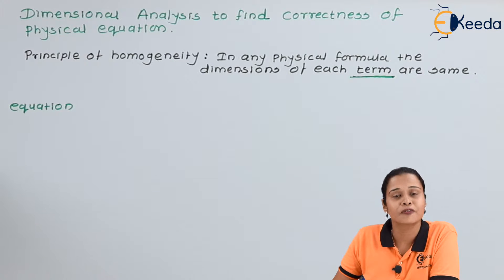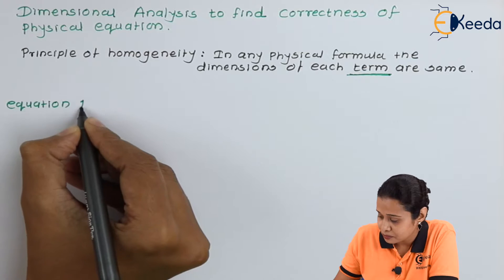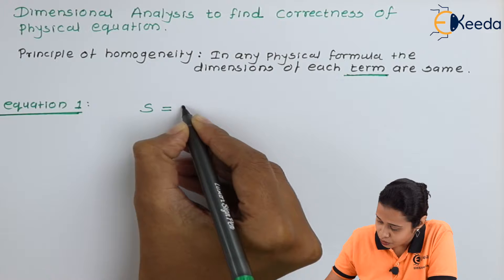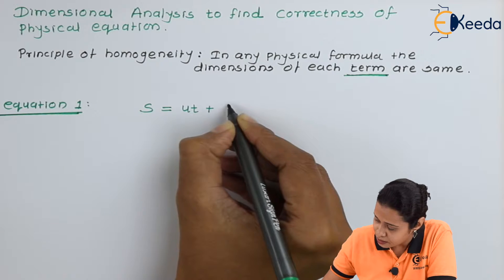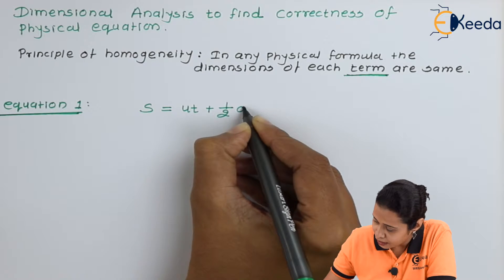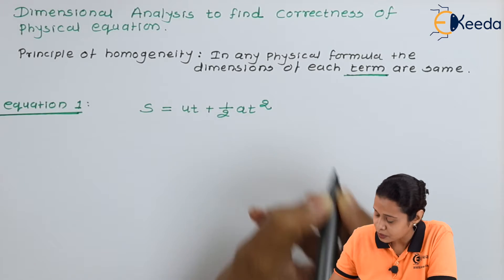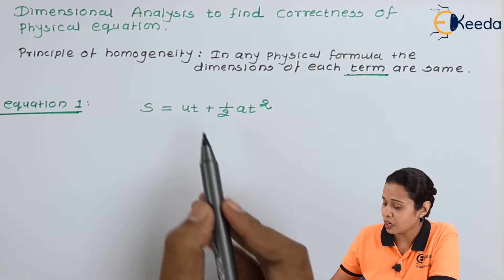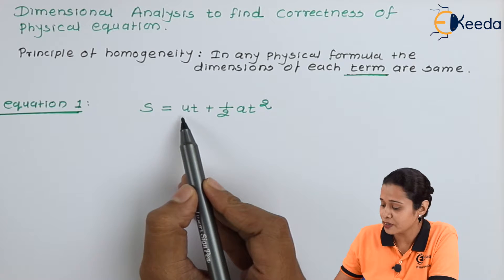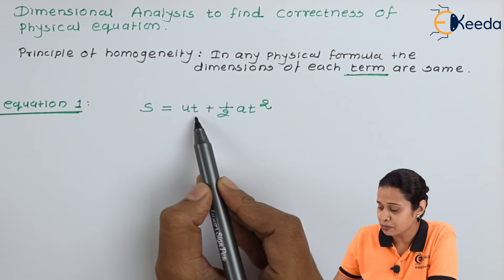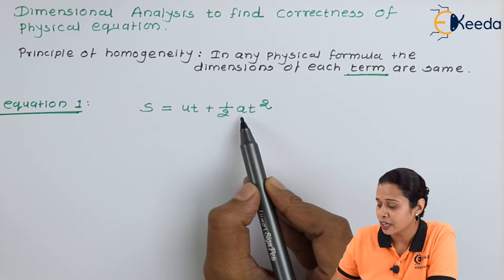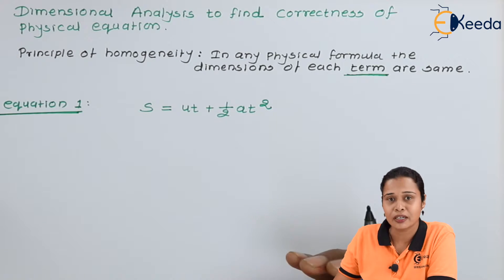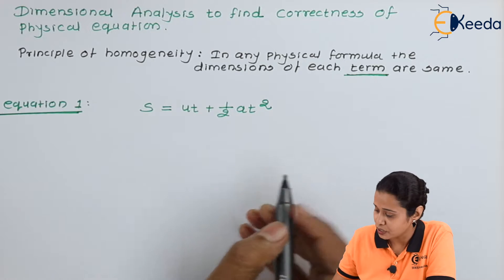Let us consider first equation. Here we have equation S is equal to ut plus half at square. This is the equation of displacement. Now in this equation, we have u. u is the initial velocity, t is the time, then plus half, a is the acceleration, t is again time.